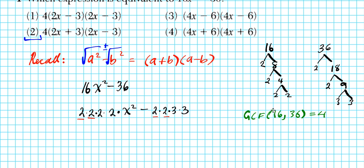We factor out 4 from these two terms. When we factor out 4, we're left with 4x squared minus 9. Always check to see if you can pull out the GCF first. Now we apply the difference of squares formula. We have 4x squared, which is a perfect square, and 9, which is also a perfect square, and we have a difference of squares. We take the square root of the first and last term and express the roots as a sum and difference.